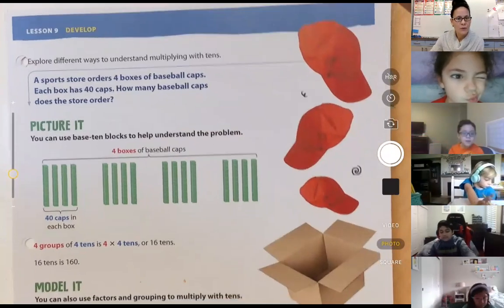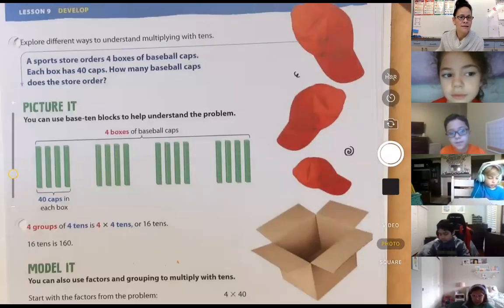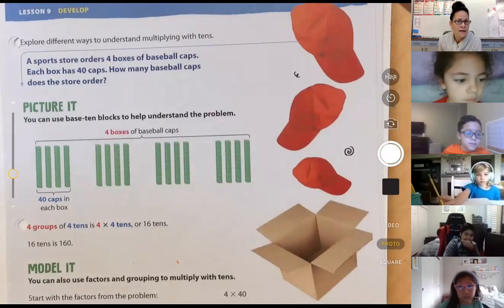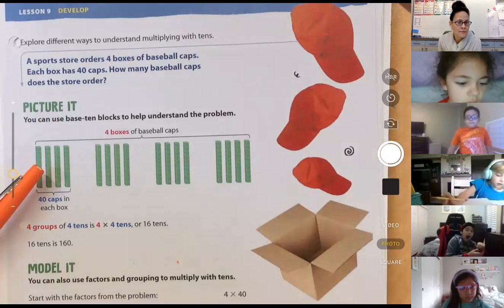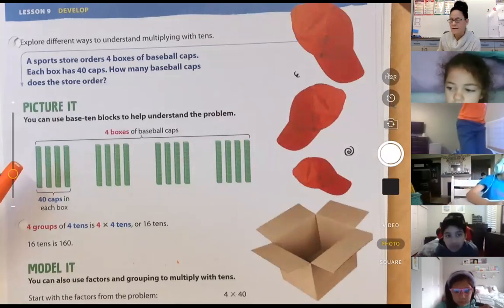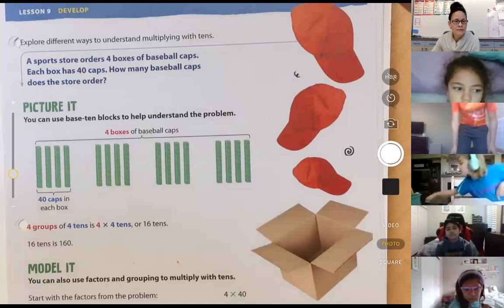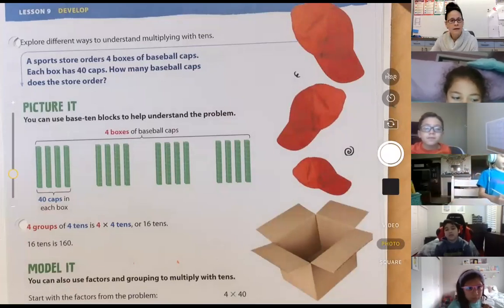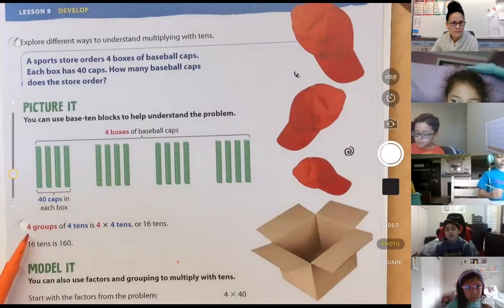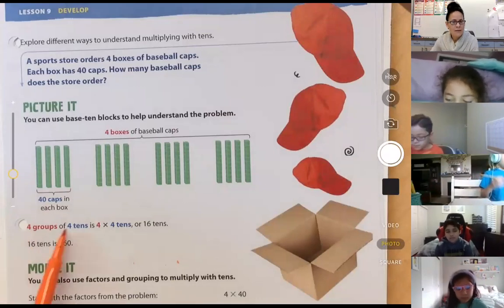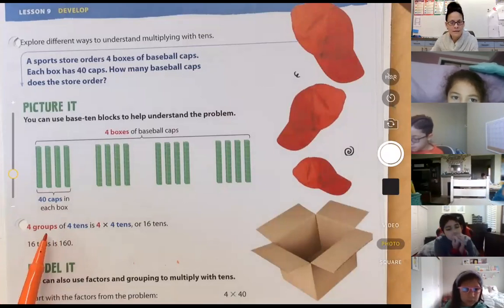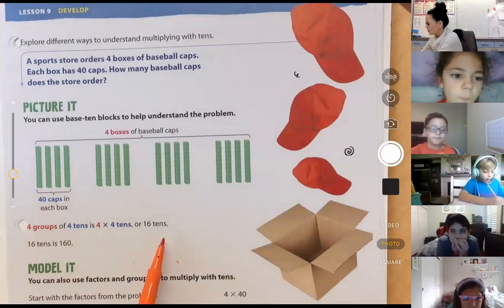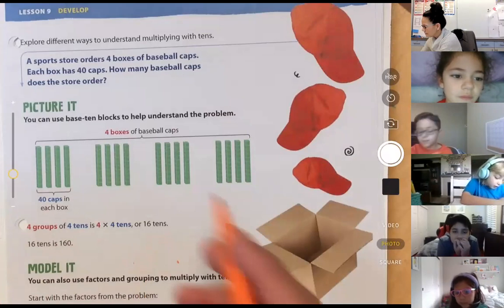So going back to the question again, this sports store ordering these four boxes of caps that each have 40 caps inside, and needing to know how many caps the store ordered. So friends, it's showing you four groups of four tens, four groups of four tens, which is four times four tens, or 16 tens. 16 tens is equal to, of course, 160.